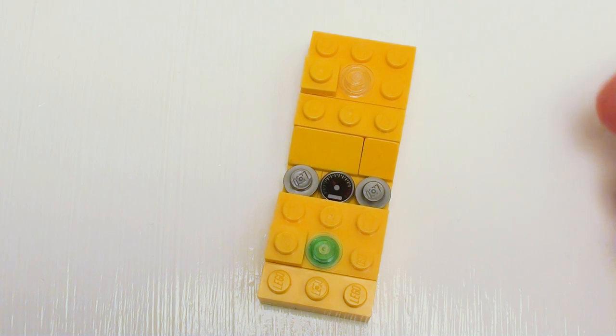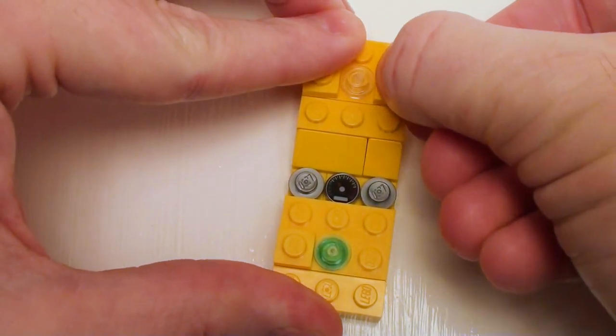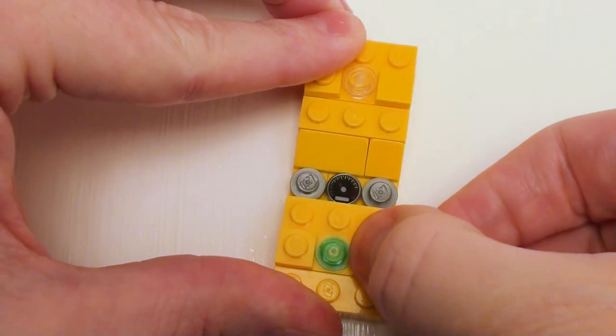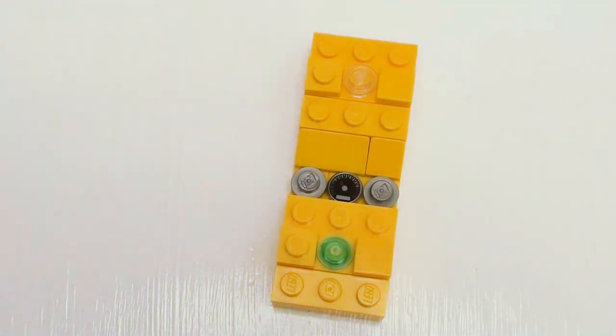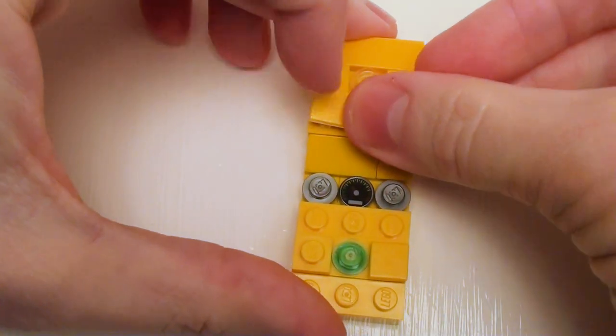These are going to be like little windows. And on the right-hand side, let's place a set of 1 by 1 flat tiles and finish the remaining areas with four 1 by 3 flat tiles.